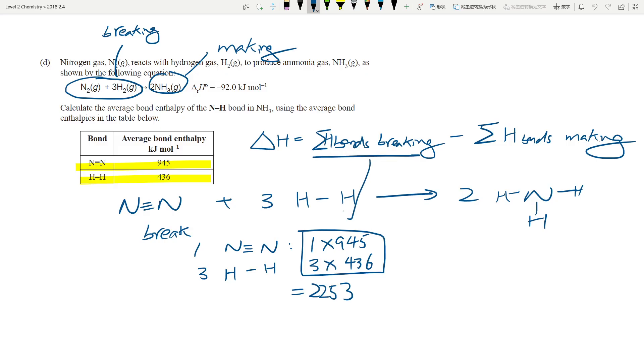What are the bonds making? In each ammonia, in each NH3, I have three NH bonds. But I have two ammonias, therefore I have six NH bonds. We're trying to calculate the enthalpy of NH, so we don't know what NH bond is, so we can make it 6x. What is the change of enthalpy? The change of enthalpy is given in the equation, so negative 92 equals 2253 minus 6x. Rearranging, 6x equals 2253 plus 92, which gives me 2345 kilojoules.